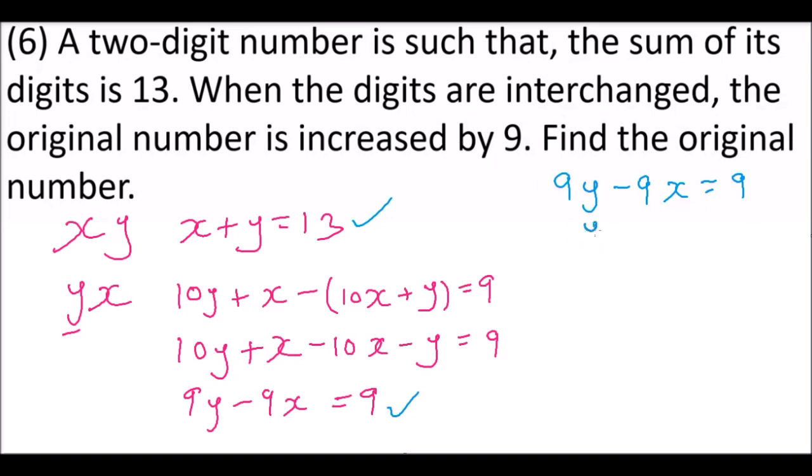So these are simultaneous equations. We can multiply this side by 9 and this equation by 1. So we have 9y minus 9x, that will not change, is equals to 9. Then we have 9y plus 9x, when you multiply that by 9, you get 117. So we add the two equations so that we eliminate x.